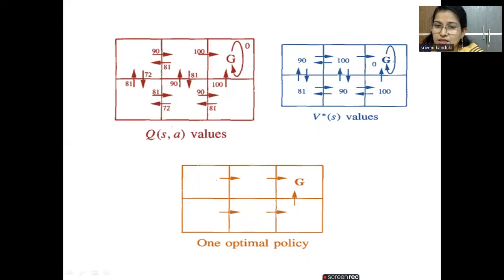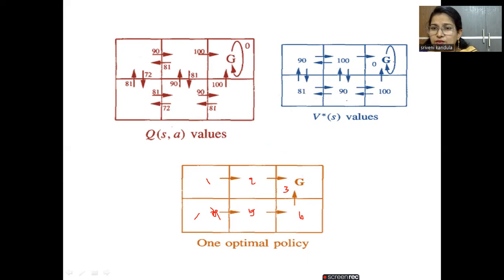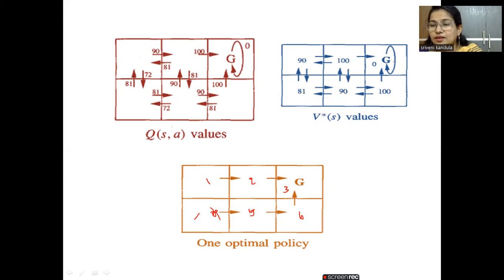The optimal control policy: the agent can start from state one, move to two, then to three — reaching the goal. Alternatively, the agent can start from four, move to five, then to six, and then to three. These are the optimal policies giving the maximum cumulative sum of rewards. From one→two→three: 90 + 100 = 190. From four→five→six→three: also 90 + 100 = 190. The agent selects maximum cumulative reward with fewer steps.